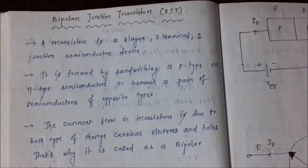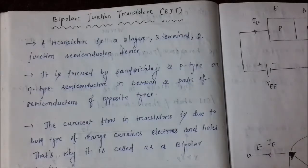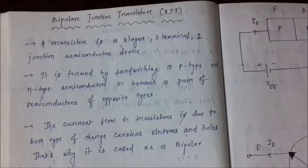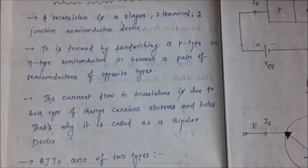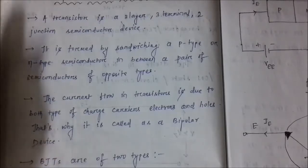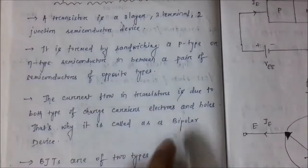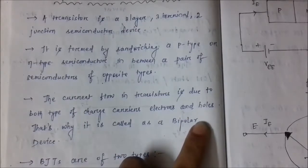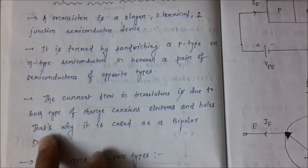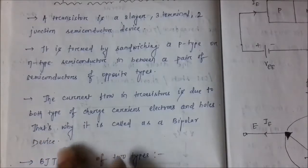That is, either you can sandwich an n-type semiconductor in between two p-type semiconductors, or a p-type semiconductor is sandwiched in between two n-type semiconductors. The current flow mechanism is due to both types of charge carriers — both electrons and holes — and that is why it is called a bipolar device.